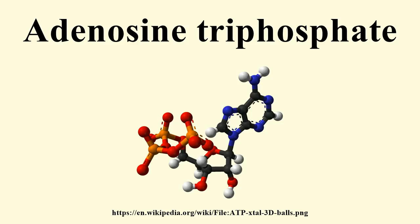The citric acid cycle is regulated mainly by the availability of key substrates, particularly the ratio of NADH to NAD⁺ and the concentrations of calcium, inorganic phosphate, ATP, ADP, and AMP. Citrate, the molecule that gives its name to the cycle, is a feedback inhibitor of citrate synthase and also inhibits PFK, providing a direct link between the regulation of the citric acid cycle and glycolysis.